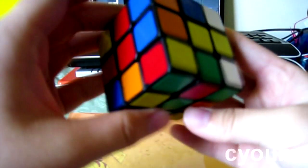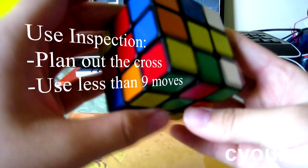The first classic mistake that I've seen in solves is not planning out your cross well enough. All cross solutions should be eight moves or less, and during inspection, you have 15 seconds to do just that. So, make sure you really plan out your cross so that you don't waste moves and you don't waste time.